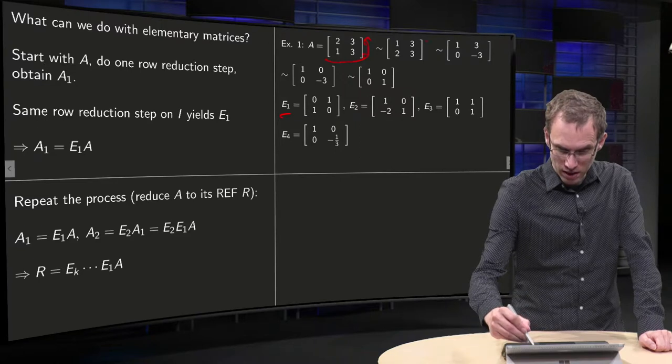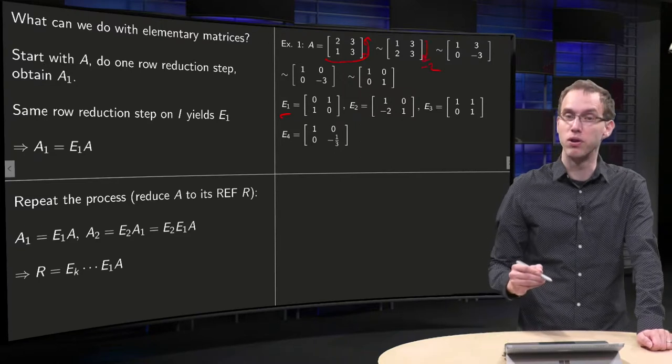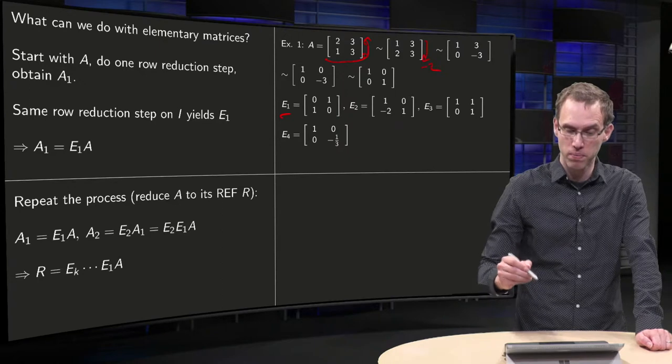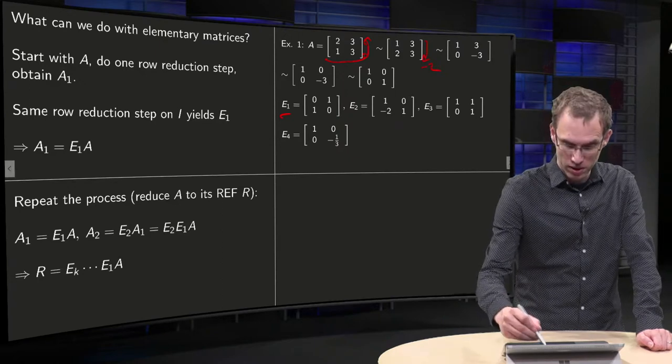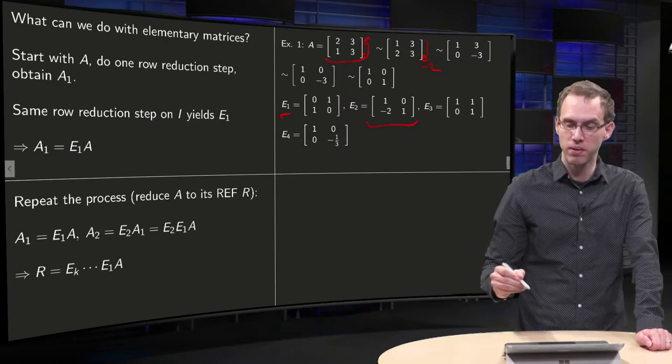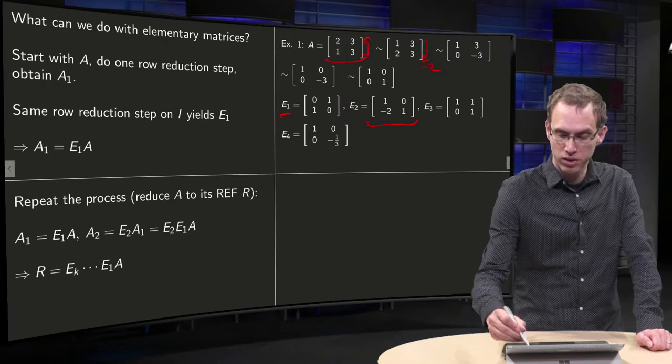Then add the first row minus two times to the second row, yields our second elementary matrix over here, and the result over there.